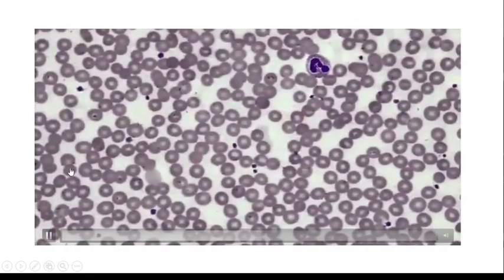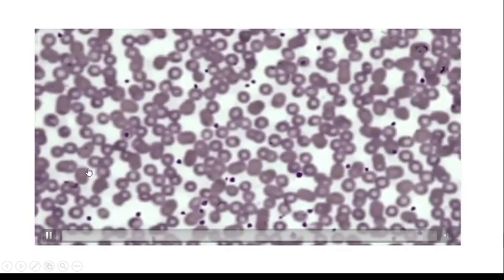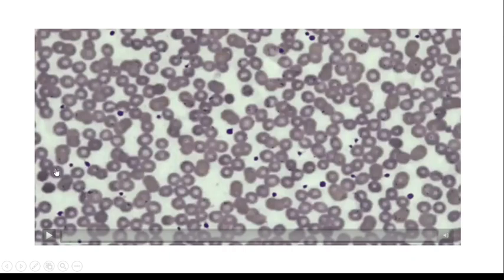Once the slide is focused, you have to scan the slide to locate the area which is going to be counted. We can see the cells. Over here, it is a little bit too thin. The other side of the area is a little bit overlapping with monolayer of the red cells.